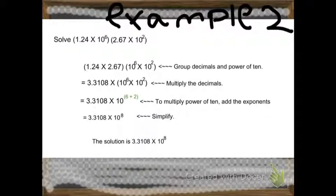The next example is 1.24 times 10 to the 6th power times 2.67 times 10 to the 2nd power. This is a multiplication problem. So, first of all,